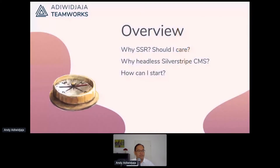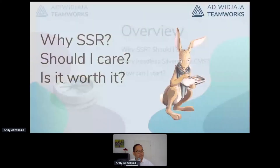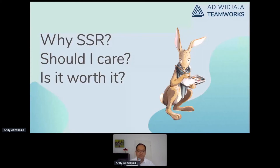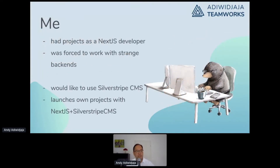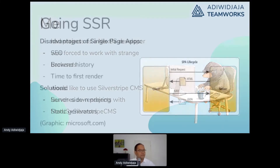First section: why SSR, should I care, is it worth it? I'm coming from a different perspective than most developers. I work as a SilverStripe developer but also as a Next.js developer in some projects. I was forced to work with Java backends and JavaScript CMSs, and I would like to use SilverStripe CMS because I think it's the best. I've launched my own projects with Next.js and SilverStripe CMS, coming from front-end development rather than content-first.